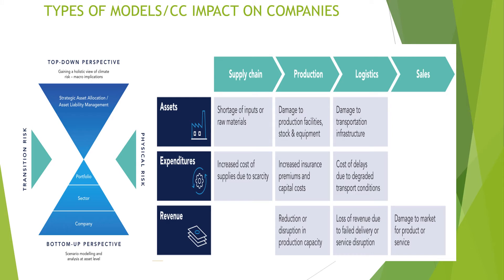Climate change can affect companies across several dimensions. On assets, it can cause shortage of inputs for production and affect production or logistical facilities. On expenditure, there are increased costs of supplies, supply concerns, and insurance costs for production facilities. On revenue, there can be disruption to production capacity, capacity loss, and loss of revenue due to failure of delivery — all of which need to be incorporated into estimates.